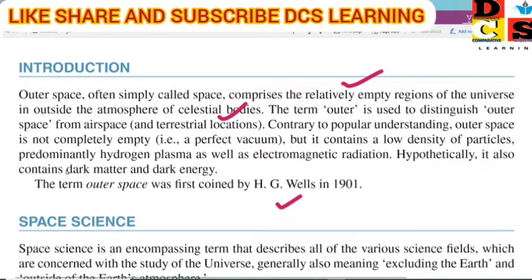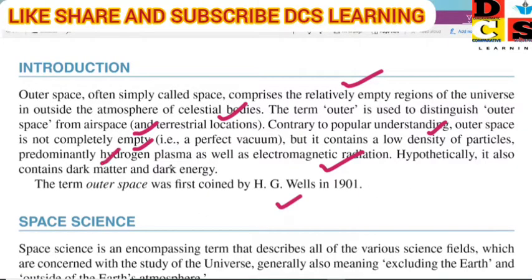Outer space is not completely empty — it is not a perfect vacuum. There are a lot of low-density particles that are predominantly hydrogen plasma and electromagnetic radiations. Hypothetically, it also contains dark matter and dark energy.